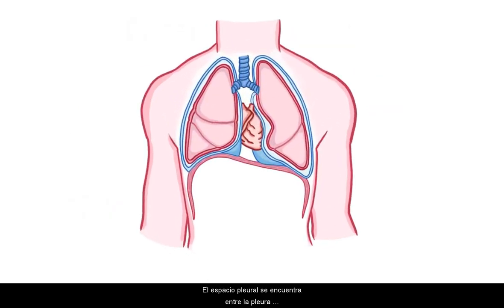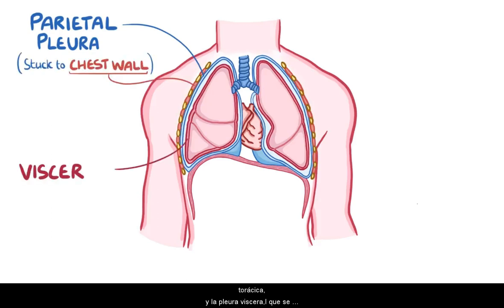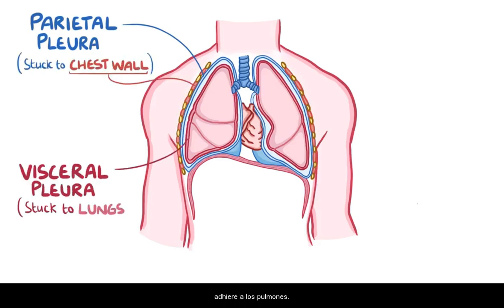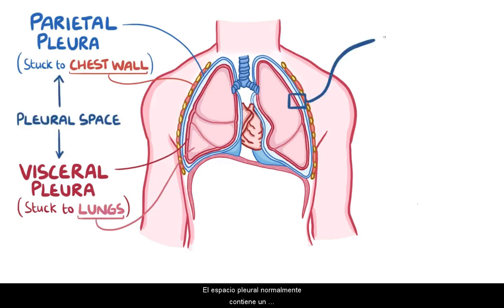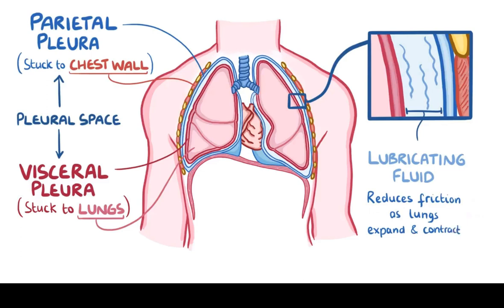The pleural space lies between the parietal pleura, which is stuck to the chest wall, and the visceral pleura, which is stuck to the lungs. The pleural space normally contains a lubricating fluid that helps reduce friction as the lungs expand and contract.